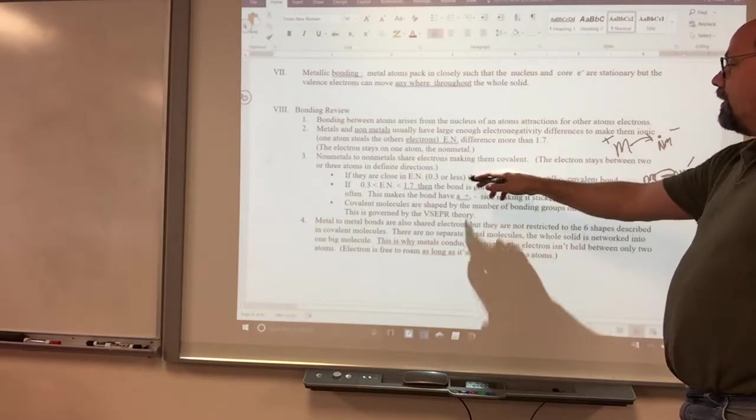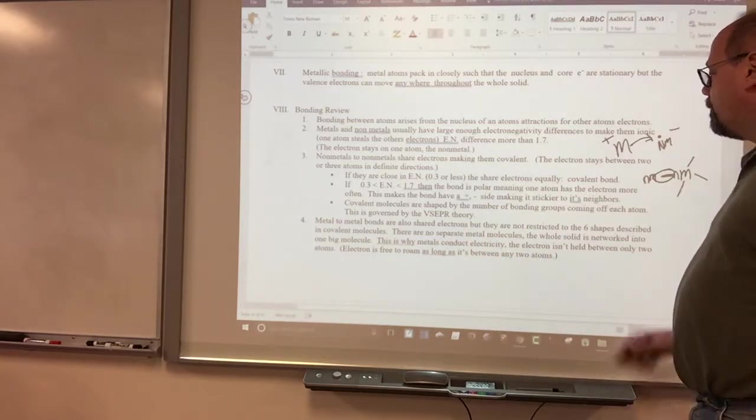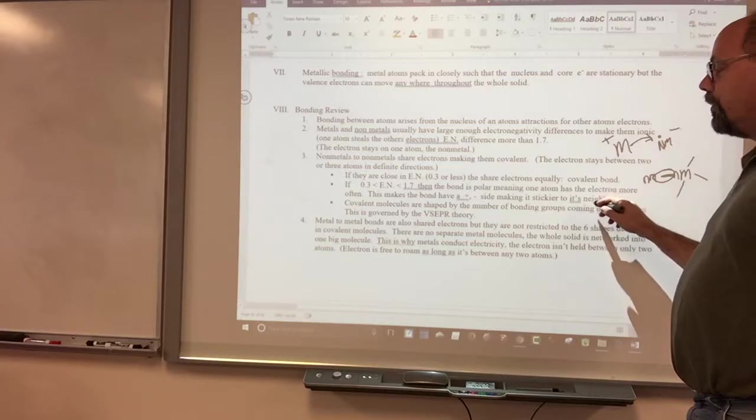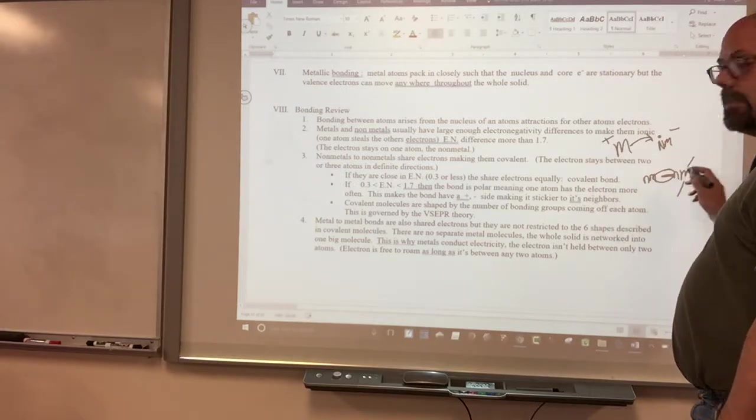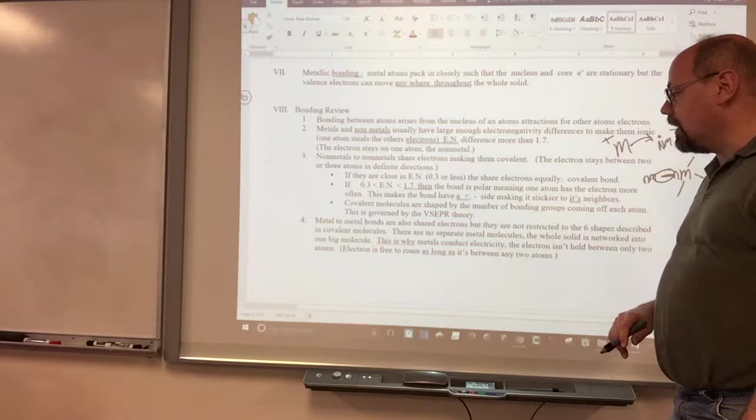If they're close in electronegativity to each other, then the electrons are shared equally. If it's more than 0.3 but less than 1.7, that means one of these is going to get the electron more often than the other.